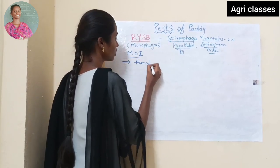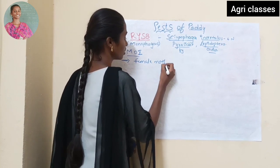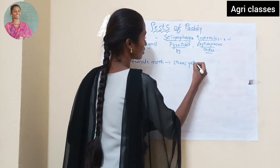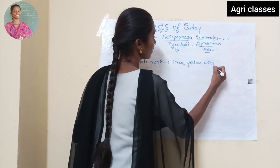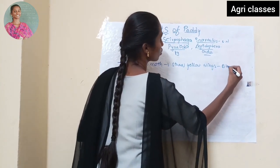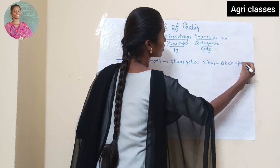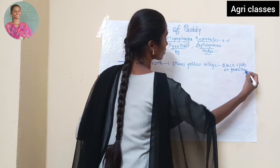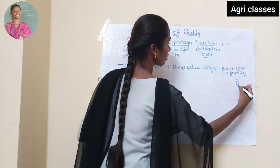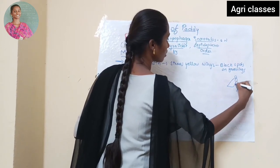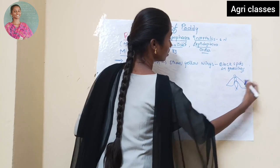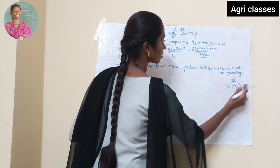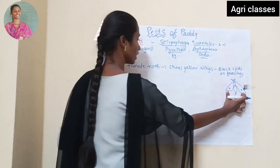Marks of identification: the female moth has straw yellowish colour wings with black spots — two black spots on the fore wings. Here you can see one black spot here and one black spot here. This identification is related to the female.